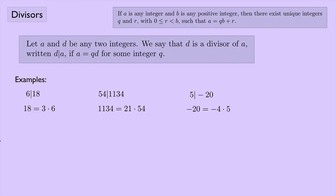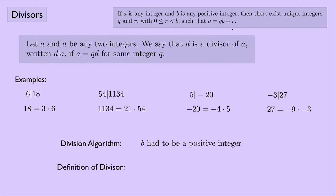Here's an important difference: -3 is a divisor of 27, letting D be negative, because 27 = -9 × (-3). In the division algorithm, B must be a positive integer. But for the definition of a divisor, D can be any integer.